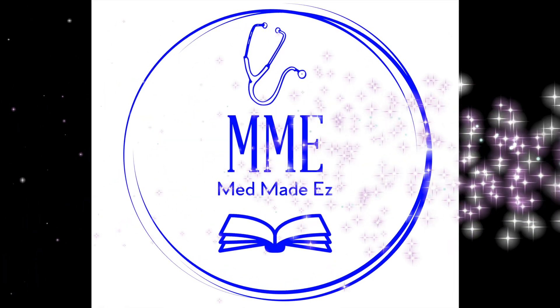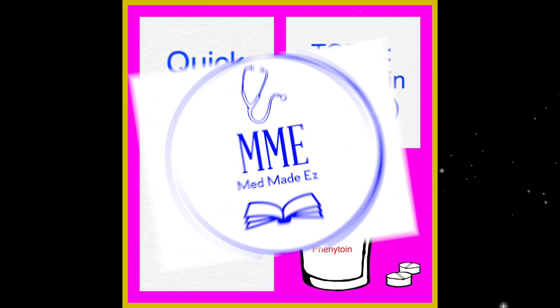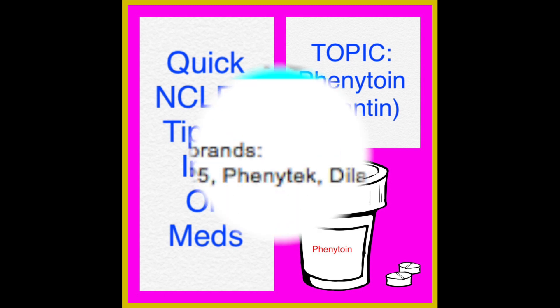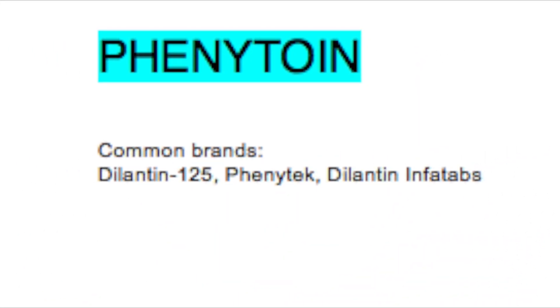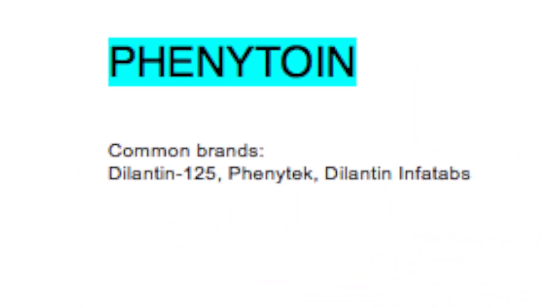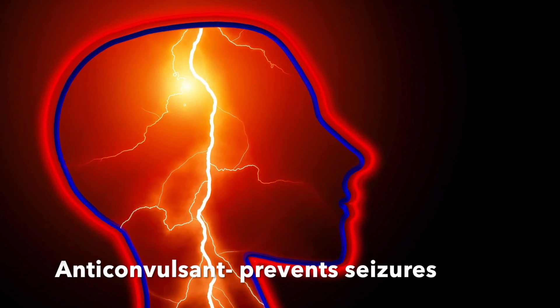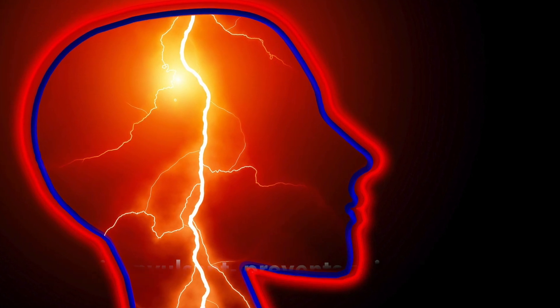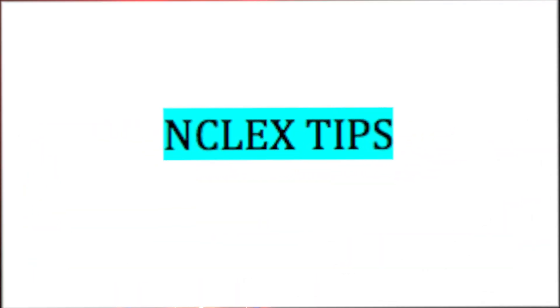Hi, Med Made Easy here. Phenytoin is the topic of our video today. Phenytoin is also known as Dilantin. It is an anticonvulsant, which basically means it helps to prevent seizures. So let's get right into the NCLEX tips that you came here for.